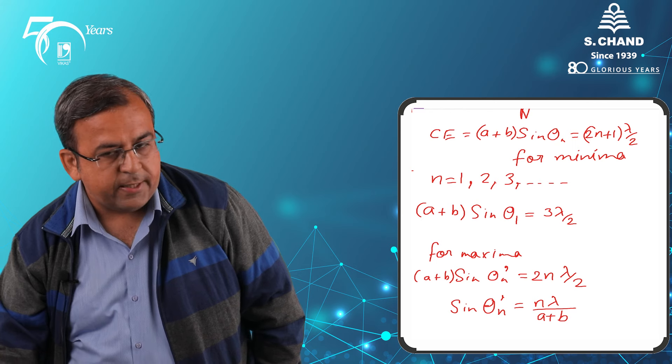Before going to the break, let me tell you what exactly we are going to cover. We will try to understand that if you take sinθ₁ and sinθ₂, the difference will be dependent on which factors. When we come back after the break, we will understand that it depends not only on the wavelength but on the slit width along with the opaque portion's width as well.